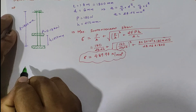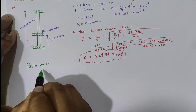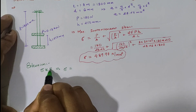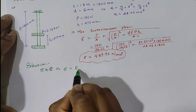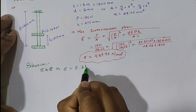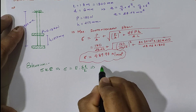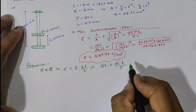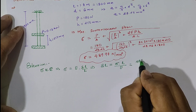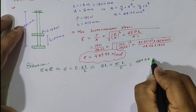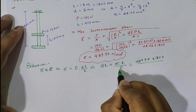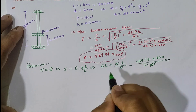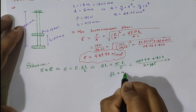For maximum extension, stress is directly proportional to strain. Removing the proportionality gives modulus of elasticity E, and strain ε = δL/L. Therefore δL = σ × L / E. Putting in the values: σ = 489.97 N/mm², L = 1800 mm, and E = 2 × 10⁵ N/mm², giving maximum extension δL = 4.41 mm.